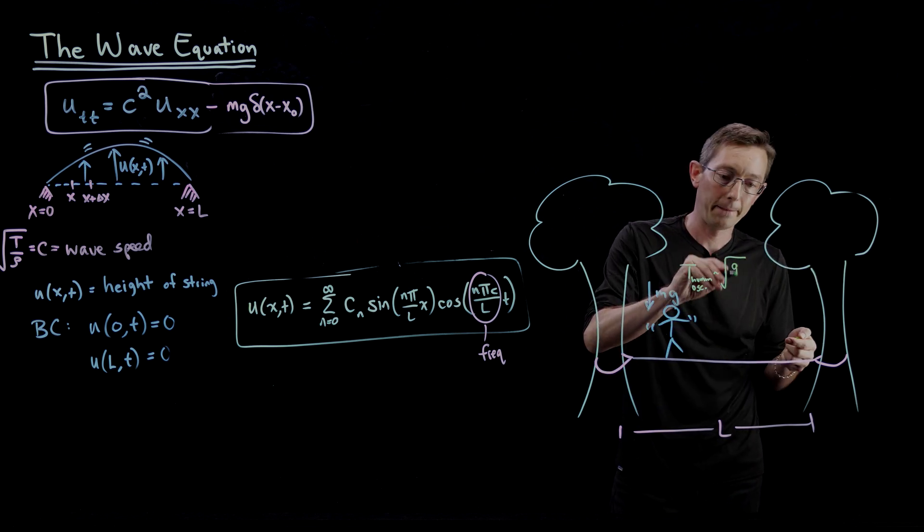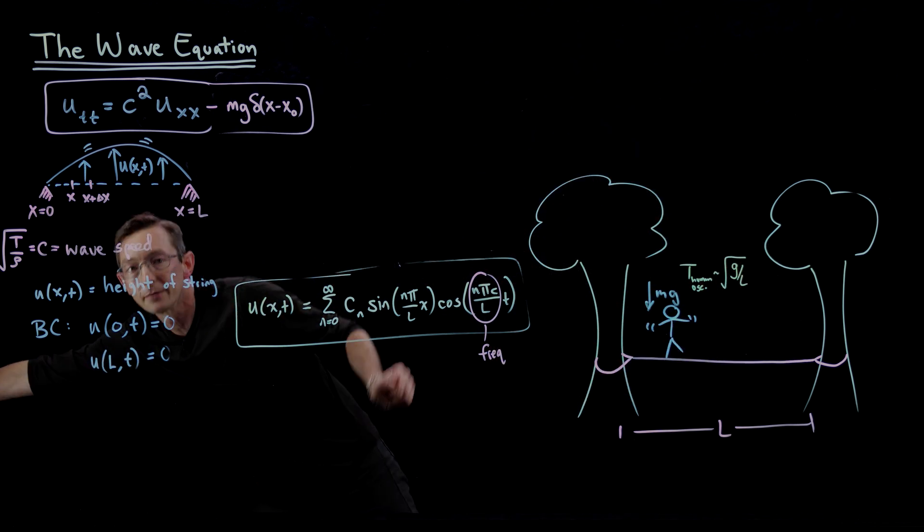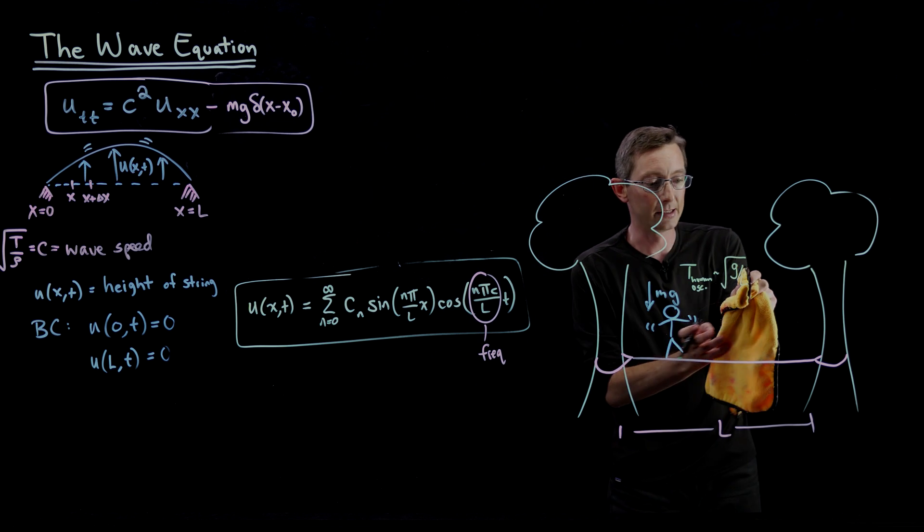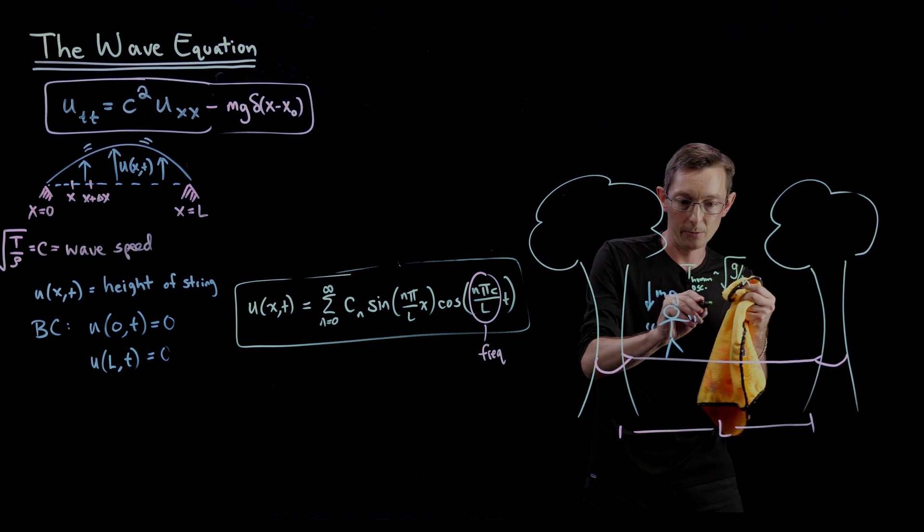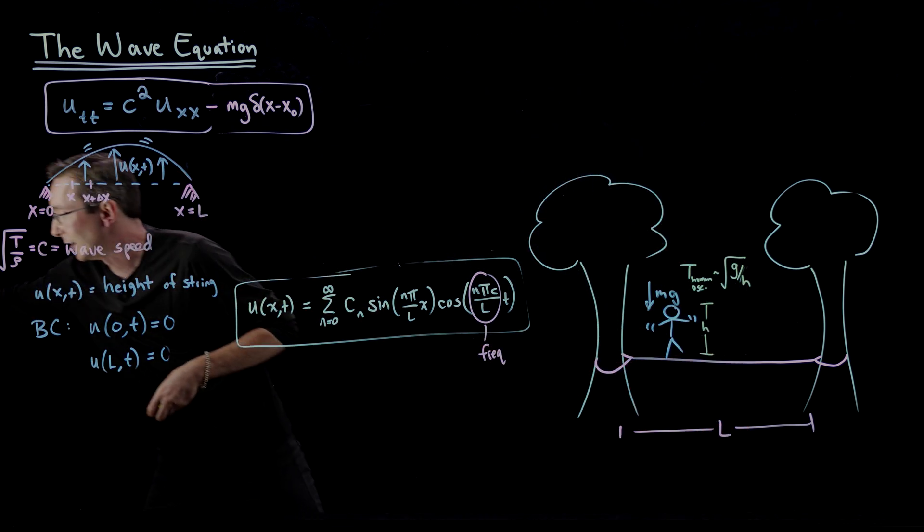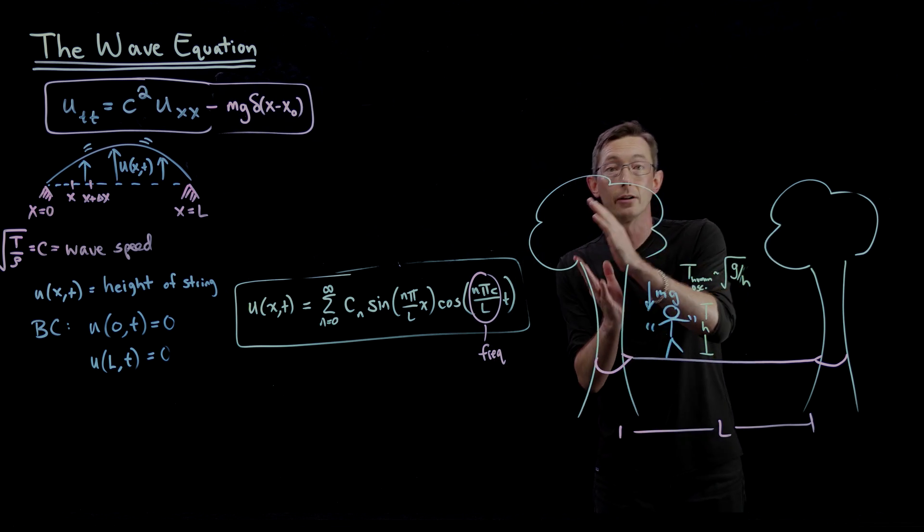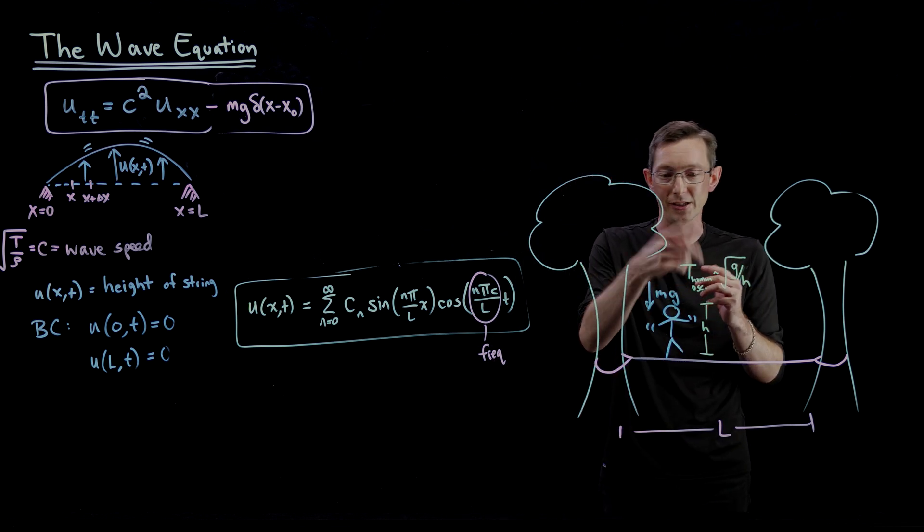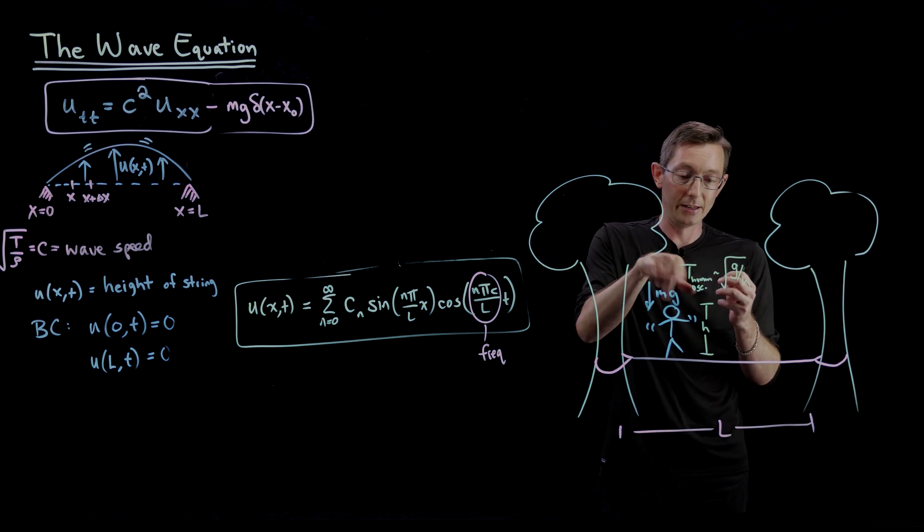Let's call this h, the height of the human. So the height of the human h and gravity sets up another frequency, which is related—the inverse of this period is the frequency.